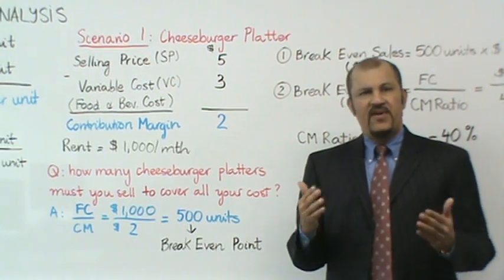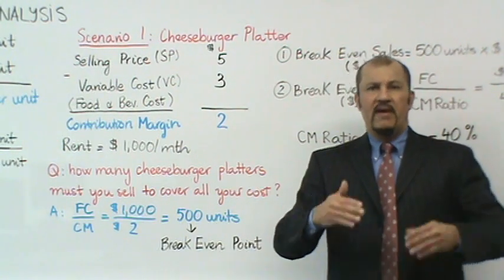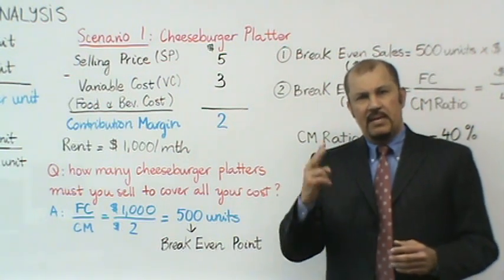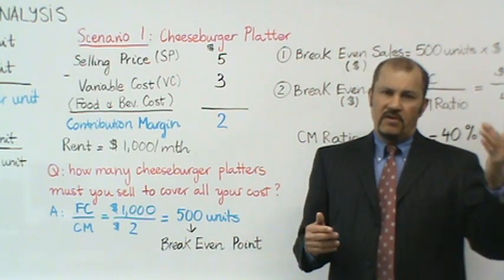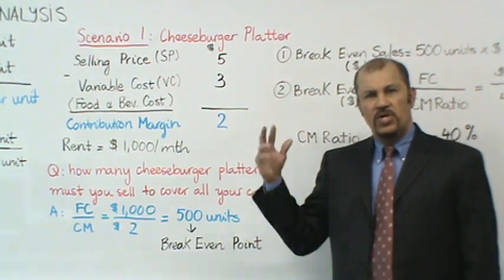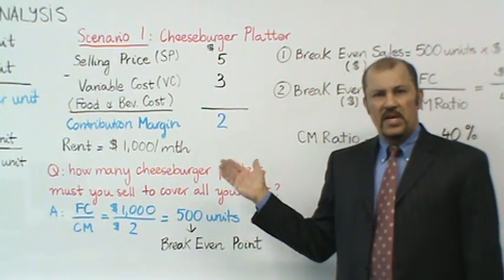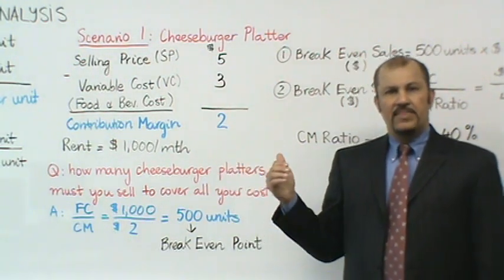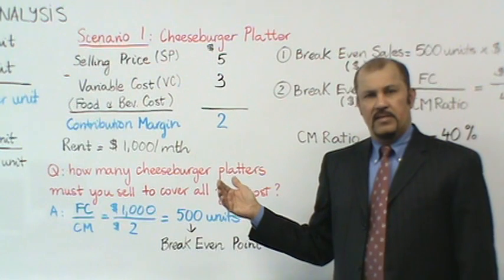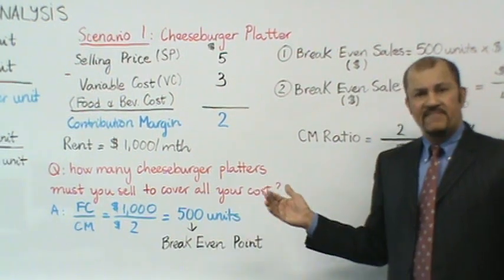Therefore, if I sell 500 cheeseburger platters, I will have covered all of my rent costs. Another way to say this is, if I sold 500 cheeseburger platters, I cover all of my costs because all of my costs can be broadly grouped into two groups: food and beverage costs as one group, and your rent cost as your second group. Food and beverage were my variable costs, rent was my fixed cost. How did I arrive at 500? If I take the $1,000 of rent fixed costs and divide it by the contribution margin of two dollars, that allows me to calculate 500 units as the answer. And 500 units is what we refer to as a break-even point, BEP.